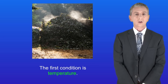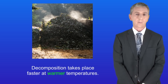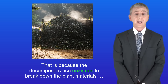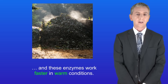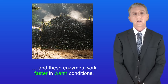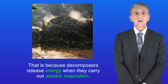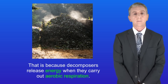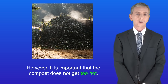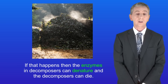The first condition is temperature. Decomposition takes place faster at warmer temperatures, because the decomposers use enzymes to break down the plant materials, and these enzymes work faster in warm conditions. Compost heaps tend to be quite warm anyway, because decomposers release energy when they carry out aerobic respiration. However, it's important that the compost does not get too hot. If that happens, the enzymes in decomposers can denature, and the decomposers can die.